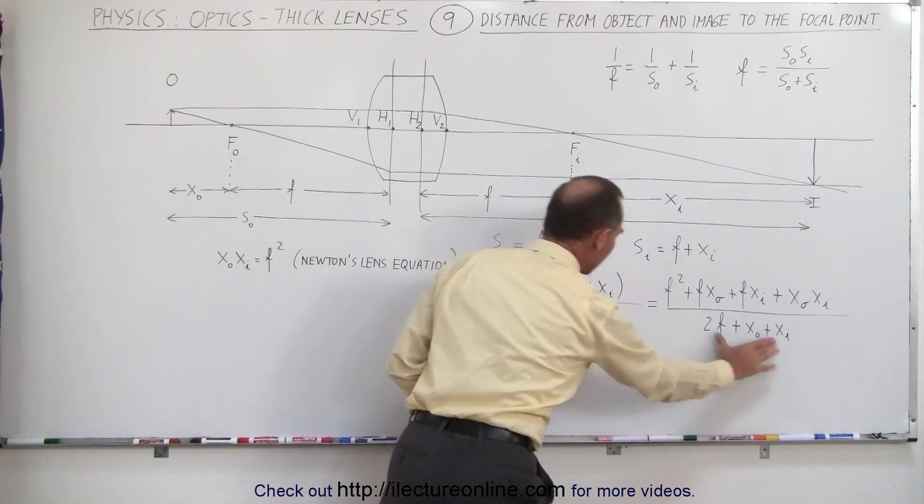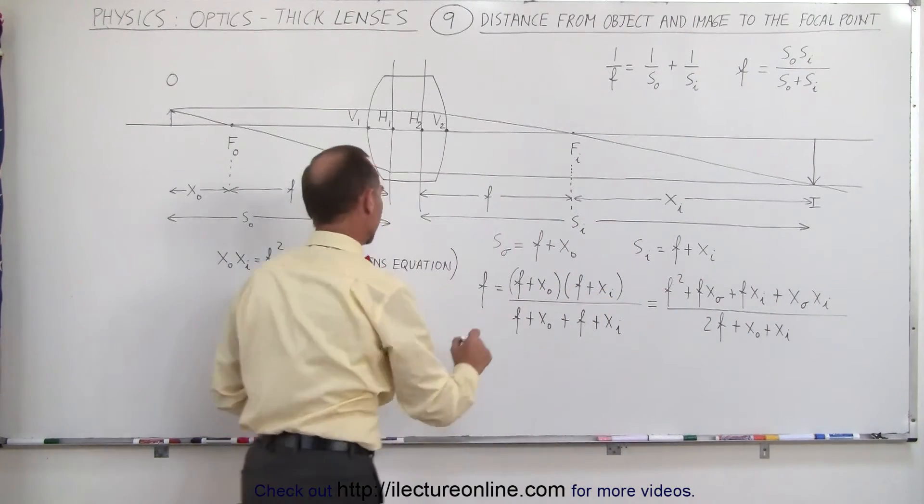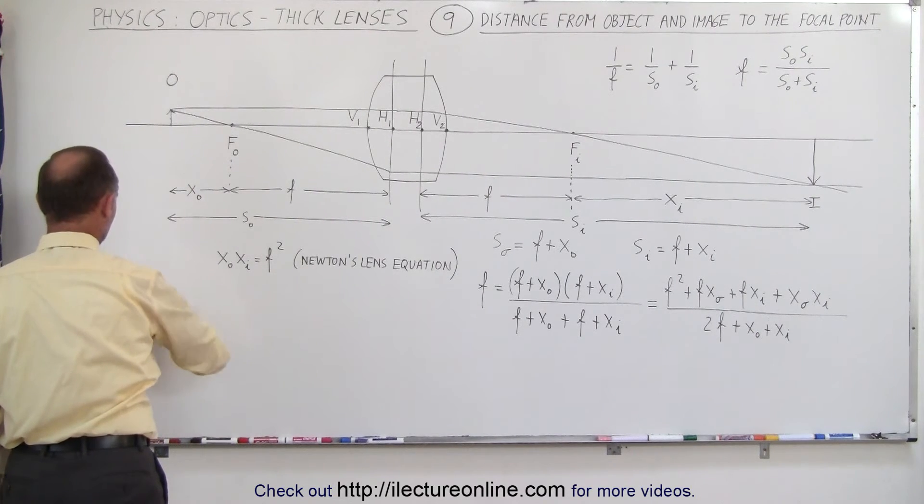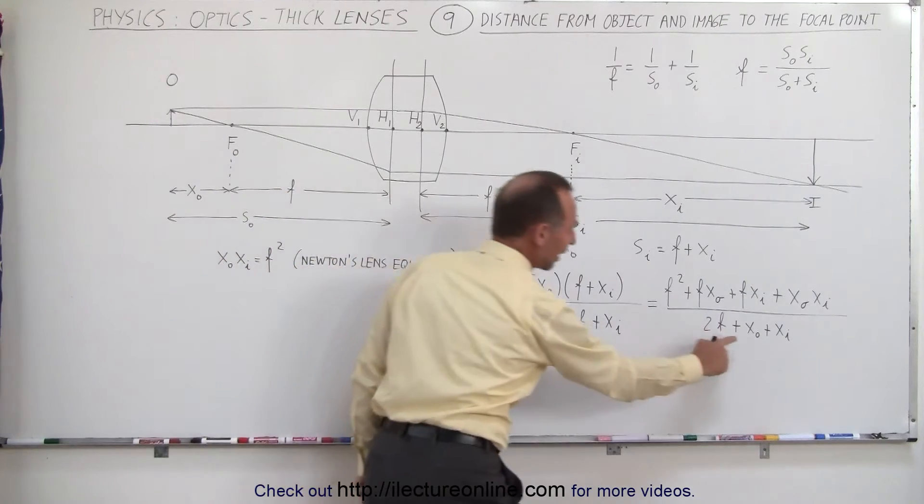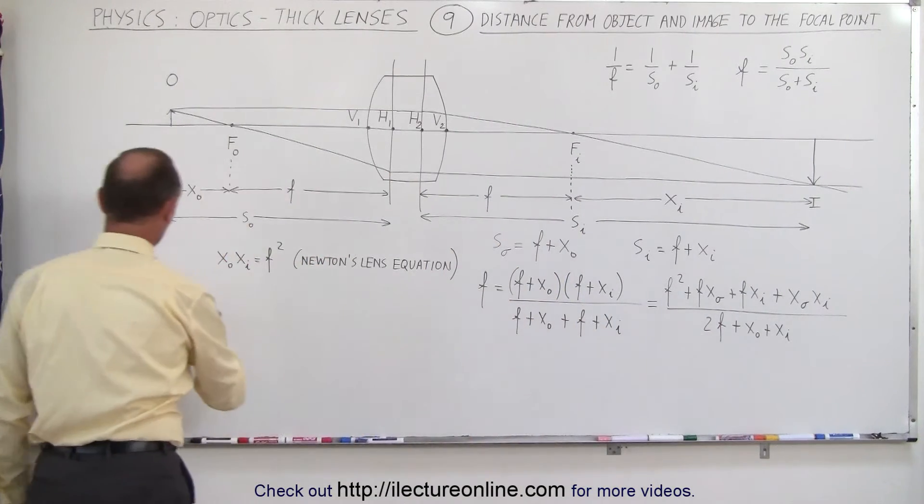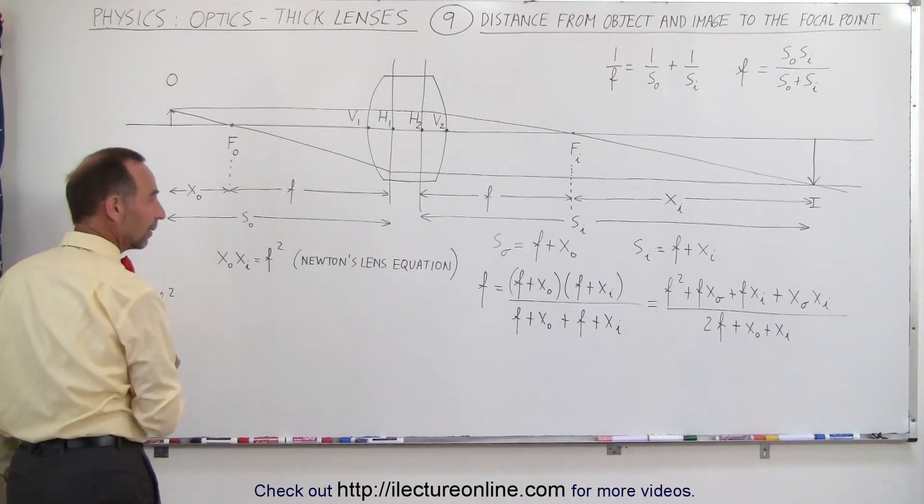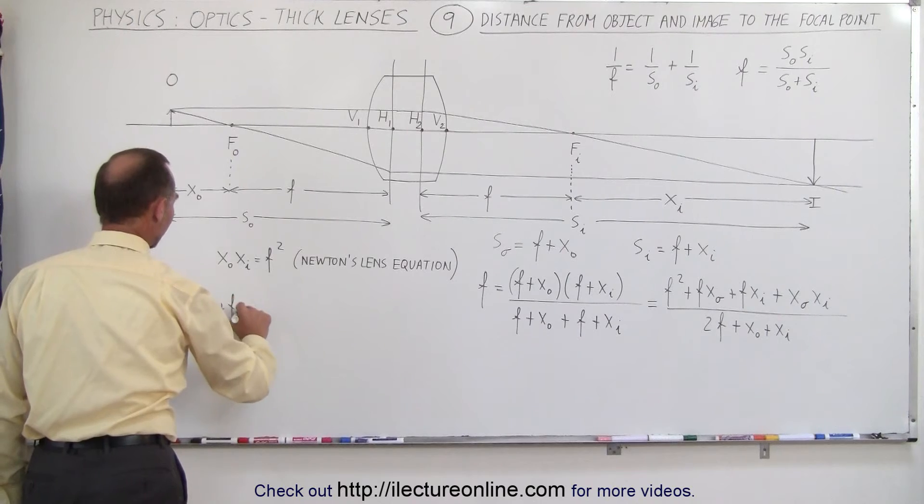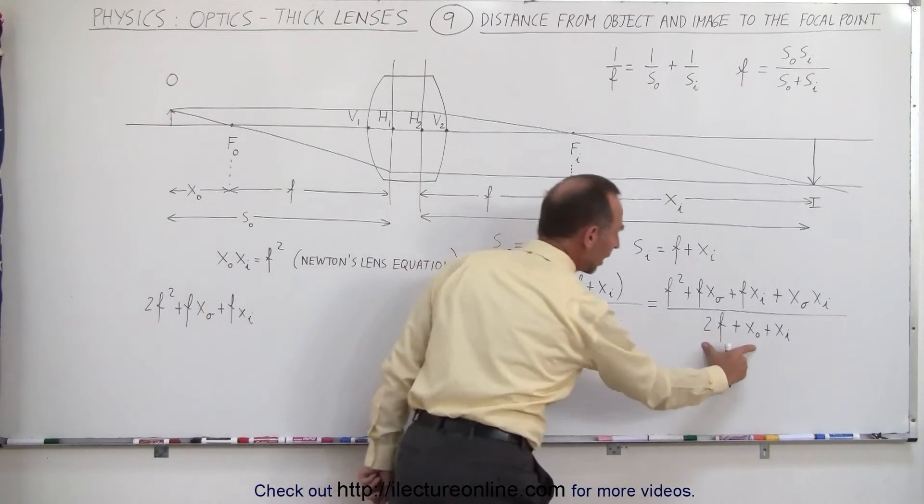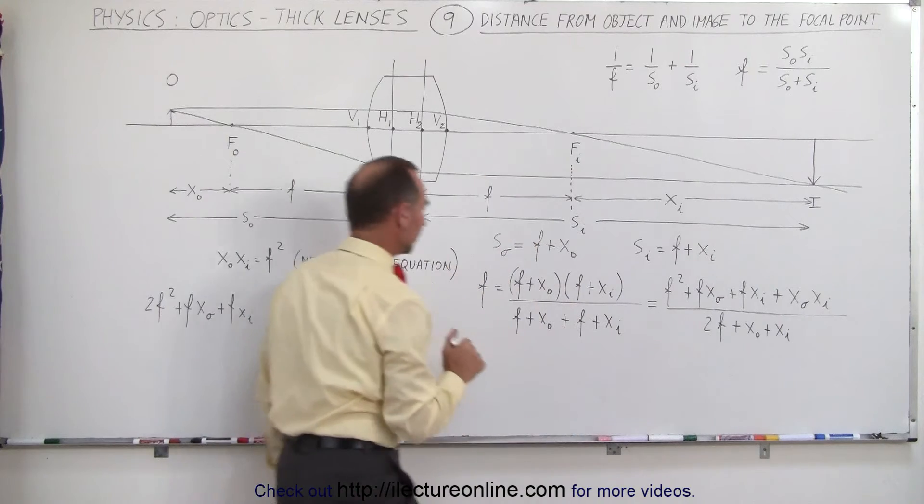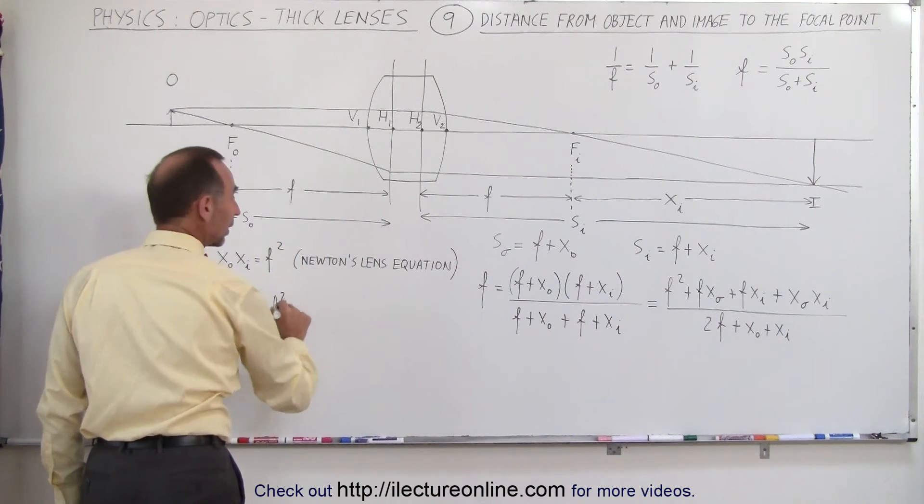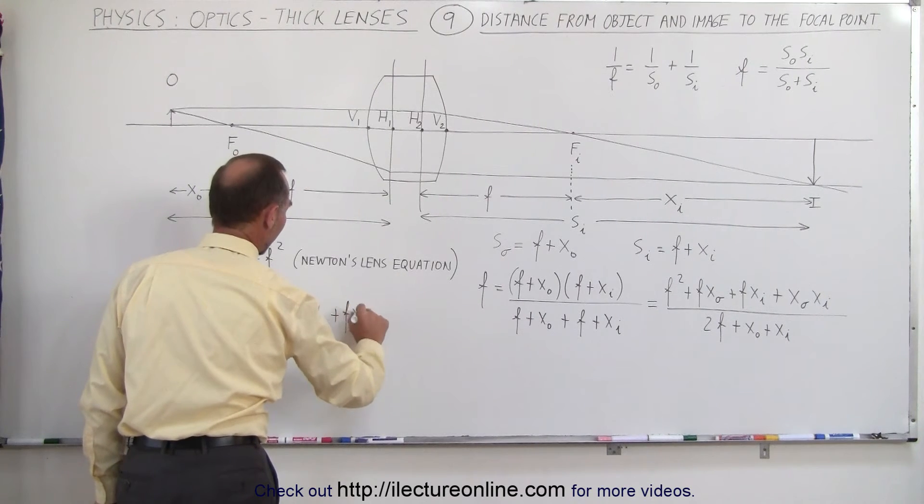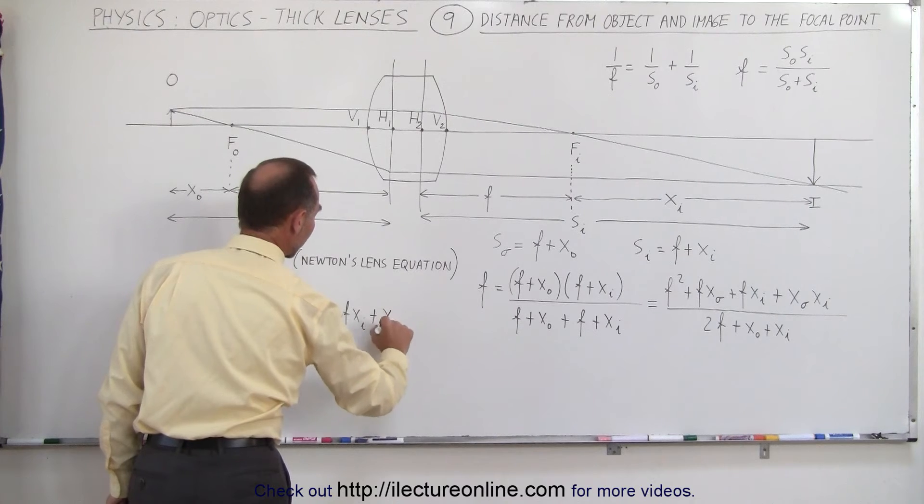Now the next thing we're going to do is we're going to cross multiply, multiply the denominator times f and set it equal to the numerator. So coming over here that ends up being f times, well I can just do it in one step, I'm simply going to multiply f times this. That'll give us on the left side 2f squared plus f x sub o plus f x sub i, which means f times this denominator, that's equal to the numerator. So that equals f squared plus f x sub o plus f x sub i and plus the product of x sub o times x sub i.